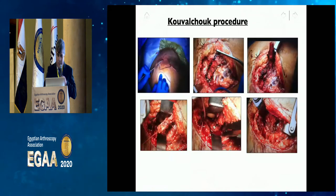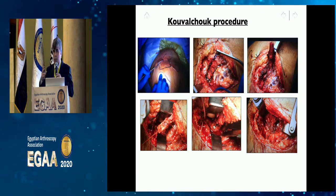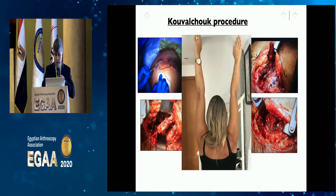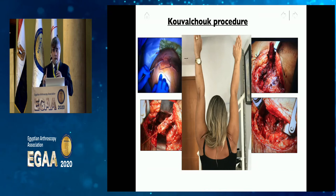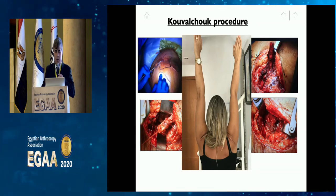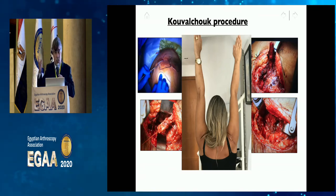Since she had already undergone a glenoid osteotomy and two prior procedures, and was not properly rehabilitated initially, we performed the Kuvchuk procedure — a rare technique using an acromion flap with deltoid fixed to the posterior glenoid, essentially a reverse Latarjet using the acromion with deltoid instead of the coracoid. She did well at one year, but during a workers' compensation medical exam the physician dislocated her shoulder, and she returned to near her preoperative status.